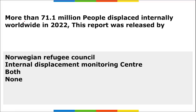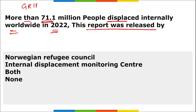Next, we are talking about migration. The data shows more than 71.1 million people were displaced internally worldwide in 2022. A report was recently released — the Global Report on Internal Displacement, GRID 2023, subtitled 'Internal Displacement and Food Security.' This report stated that more than 71.1 million people were displaced internally around the globe in 2022.